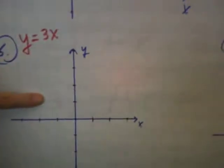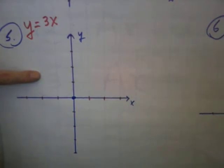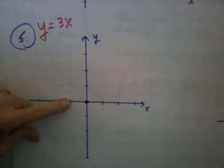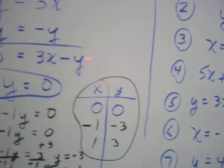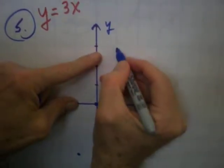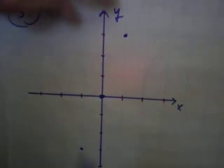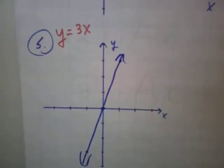Let's come over and plot. X is 0, Y is 0 — origin. Second value: X is negative 1, Y is negative 3. Come over negative 1 and down 3 — there's the second point. Third value is 1, 3. Go to the origin, over 1 and up 3. You can see those points are lined up. Connect them and it goes right through the origin. Both the third and fourth problems had the same characteristic — the line went through the origin.